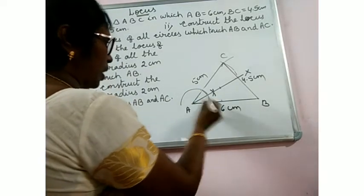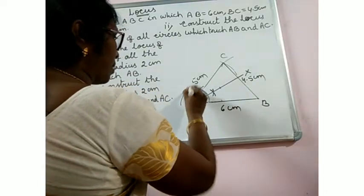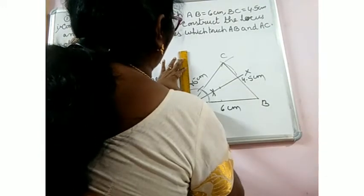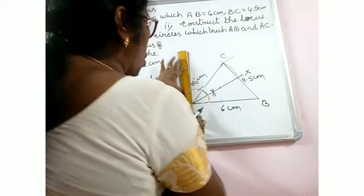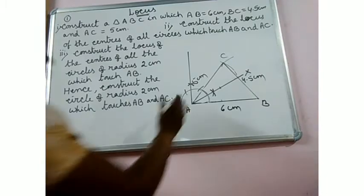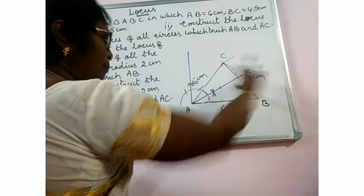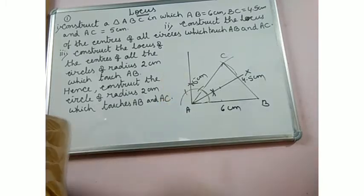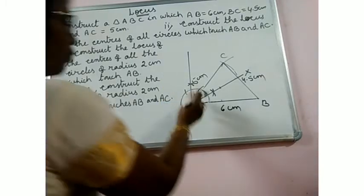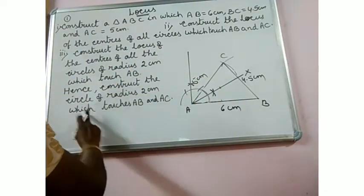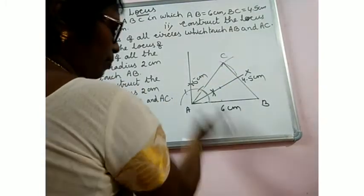We need to construct a perpendicular — a 90-degree angle. The locus of the centers of all circles of radius 2cm is the line parallel to AB at a distance of 2cm from AB. You can get one line on this side. But since we need to construct the circle that touches AB and AC, and AC is on this side, we work on this side.